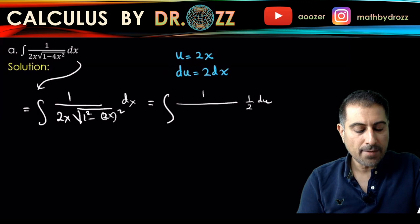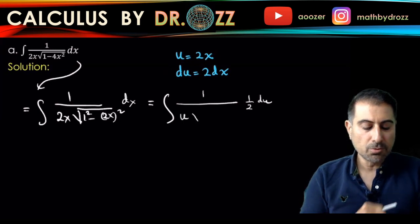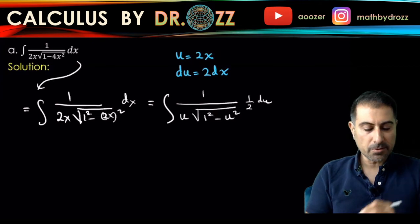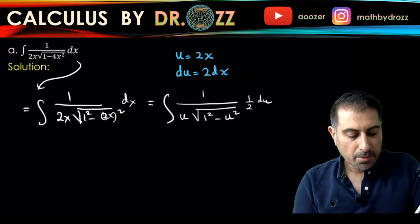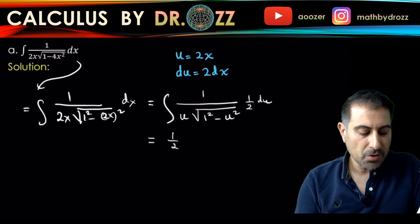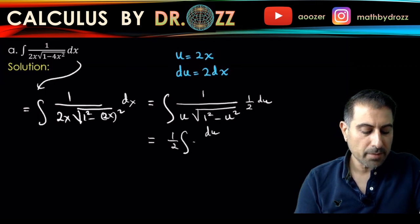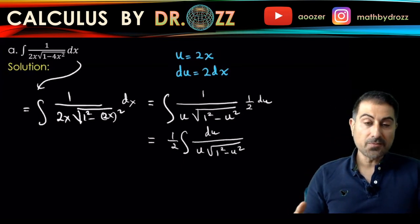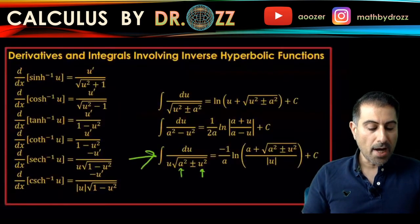And then you have 1 squared minus u squared. This is pretty much one of the integrals over there that I showed you. But let's just pull out one half. So this is du divided by u times 1 squared minus u squared. So I'm going to go back and use this formula for a equals one.